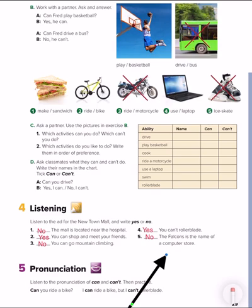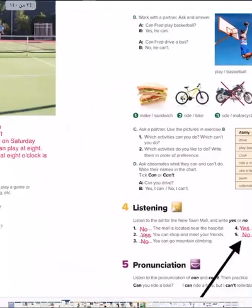Okay, my lovely students. So let's now read the questions and answer yes or no. Look, what do we have here? The mall is located near the hospital. No. You can shop and meet your friends. Yes. You can go mountain climbing. No. You can rollerblade. Yes. The Falcon is the name of a computer store. No. Very good. So let's now move to the second page.